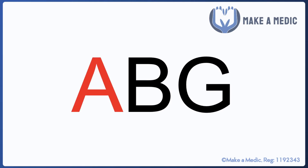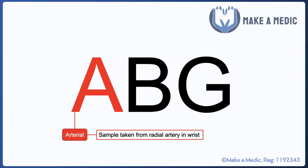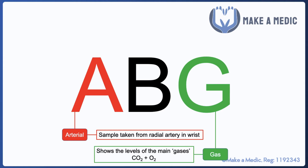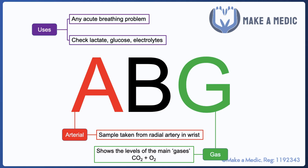First and foremost, let's talk about what exactly an ABG is. Quite simply, the A stands for arterial because a sample is taken from the radial artery in the wrist, and the G stands for gases — meaning the main physiological gases in our body, which are carbon dioxide and oxygen.